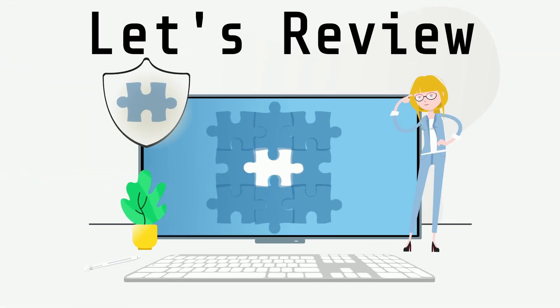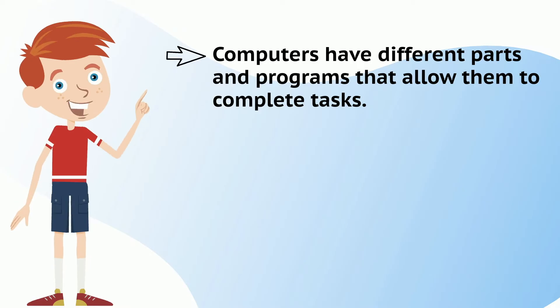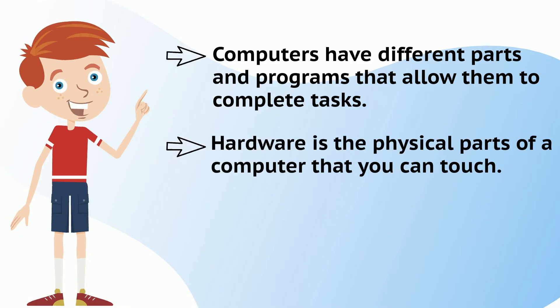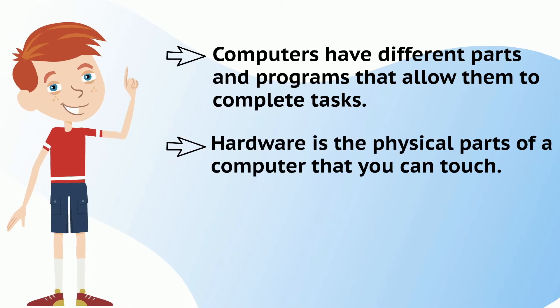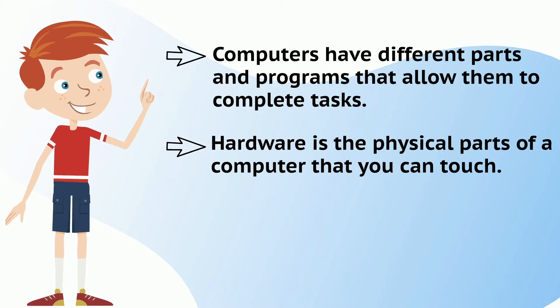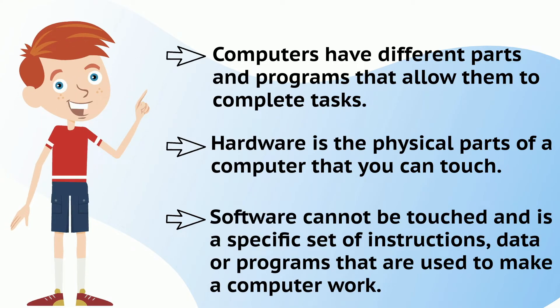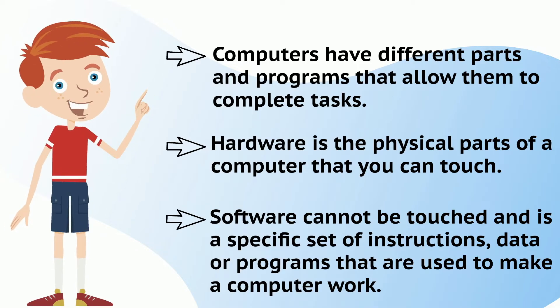Okay, let's review what we have learned. Computers have different parts and programs that allow them to complete tasks. Hardware is the physical parts of a computer that you can touch. Software cannot be touched and is a specific set of instructions, data, or programs that are used to make a computer work.